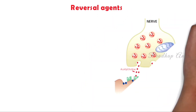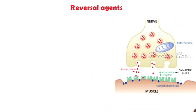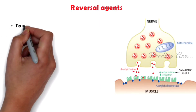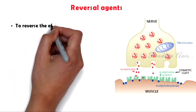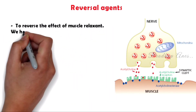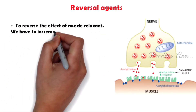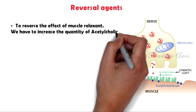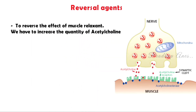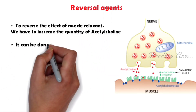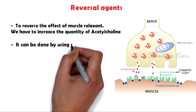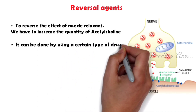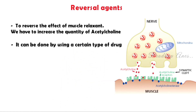Now we'll discuss how to reverse the effect of muscle relaxants. To reverse the effect of muscle relaxants, we have to increase the quantity of acetylcholine. This can be done by using certain drugs such as neostigmine and sugammadex.